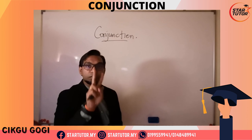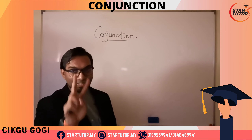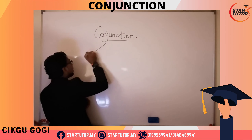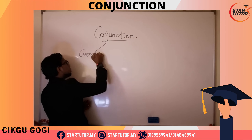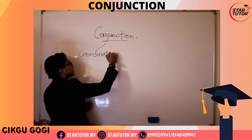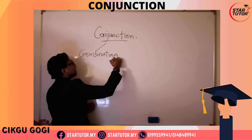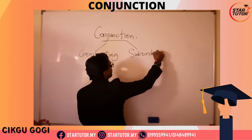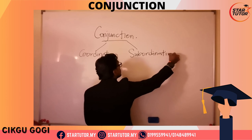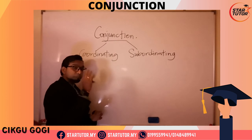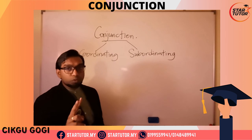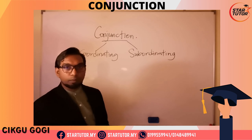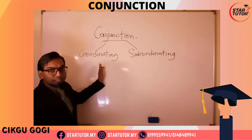We are going to divide conjunctions into two lessons. Today we are only going to look at coordinating conjunctions, and the other type is subordinating conjunctions. We split them into two lessons because they have two different rules for when to use them. So let's just look at coordinating conjunctions.